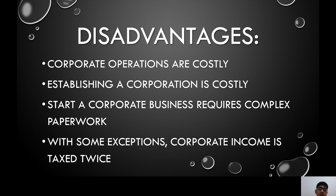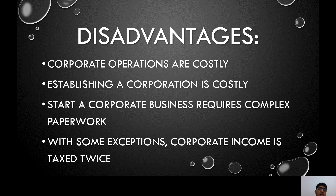The disadvantages of corporation: corporate operations are costly, requiring a board of directors, management, and employees, making it a complex form of business. Establishing a corporation is costly due to the extensive paperwork, compliance requirements, and registrations involved. Starting a corporate business requires complex paperwork. And with some exceptions, corporate income is taxed twice — first as corporate income, then again as dividend income received by shareholders. Those are the three forms of business organization. Thank you for listening.